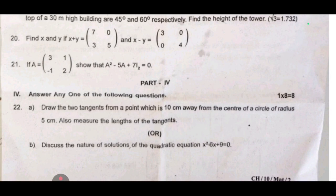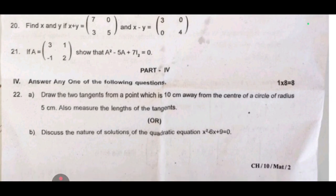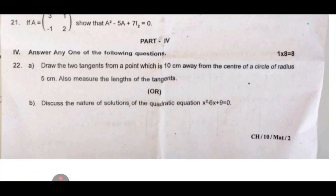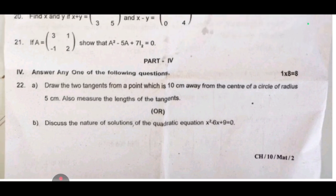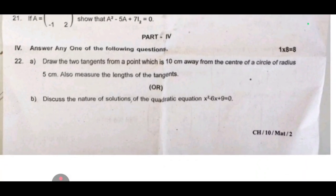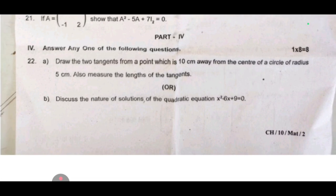This is Part 4, 8 marks, any one of the following: draw the true tangent from a point which is 10 centimeter away from the center of a circle of radius 5 centimeter, also measure the length of the tangents. This is b1: discuss the natural solutions of the quadratic equation, x is square minus 6x plus 9 equal to 0.